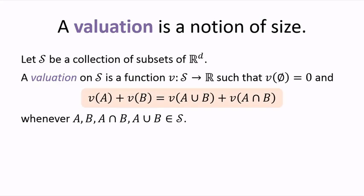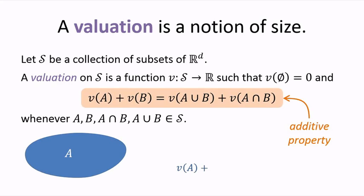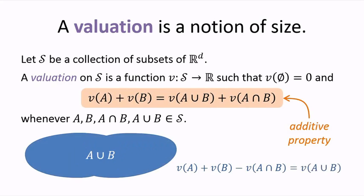This is called the additive property, or in combinatorics, the inclusion-exclusion principle. This property implies that if you know the valuation of sets A, B, and their intersection, then you also know the valuation of the union of A and B.